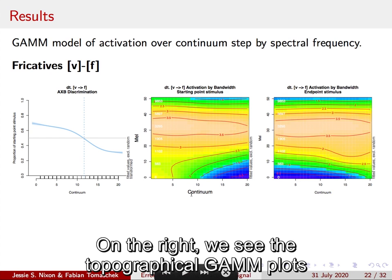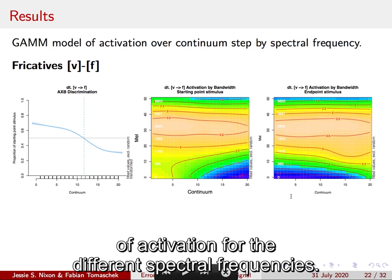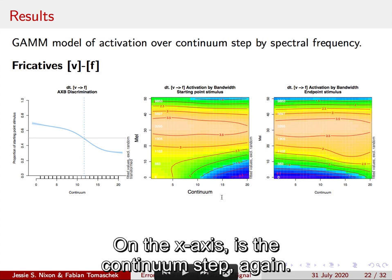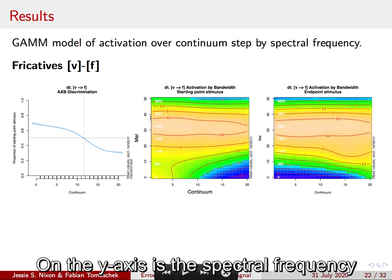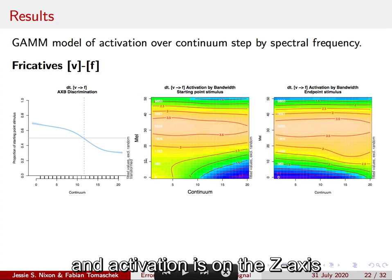On the right we see the topographical GAM plots of activation for the different spectral frequencies. On the x-axis is the continuum step again. On the y-axis is the spectral frequency, and activation is on the z-axis and is color-coded. Warm colors like yellow are high activation, blue is low activation, and green is in between.